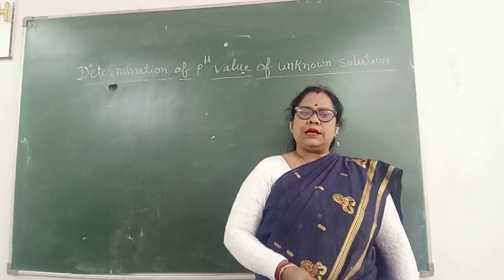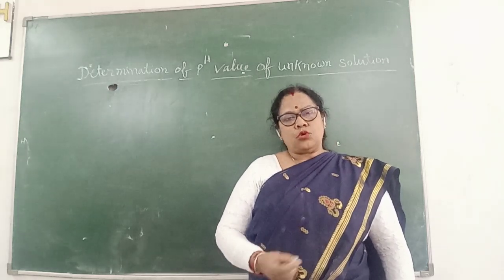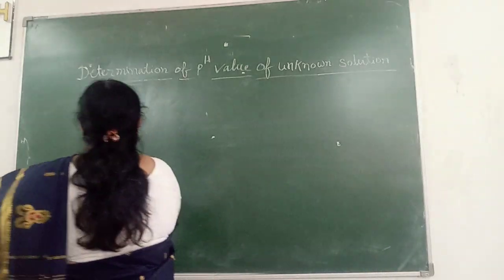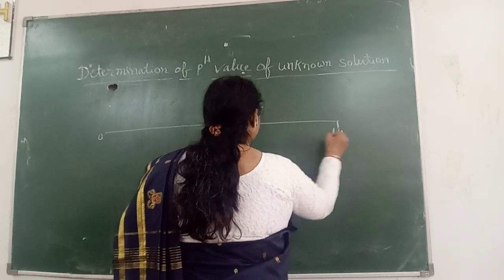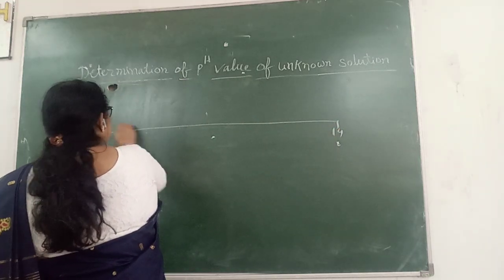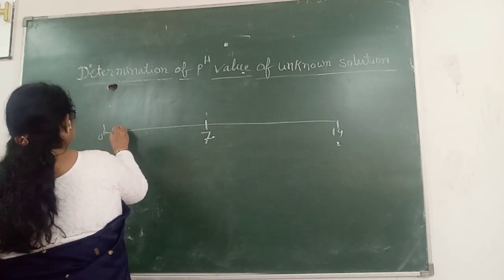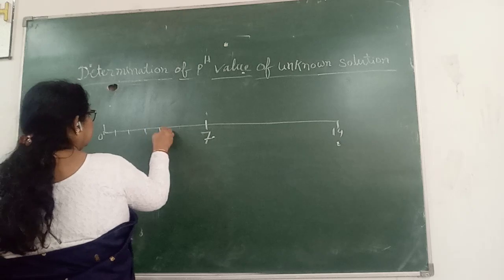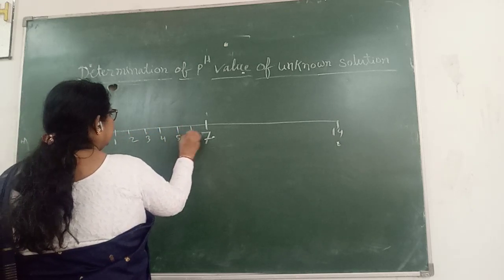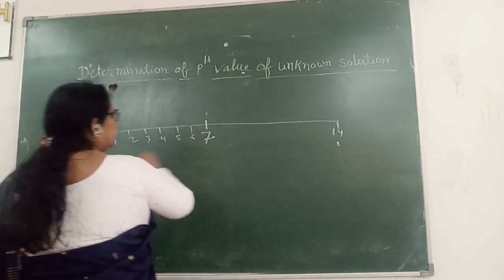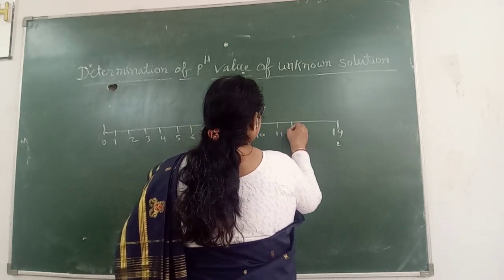The pH value is a measure of hydrogen ion concentration in water. The pH range goes from 0 to 14, with 7 as the value for neutral water.